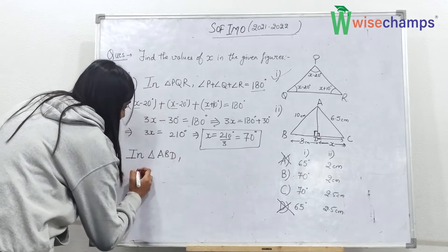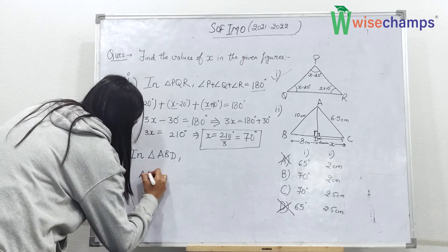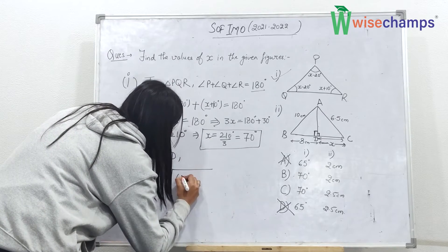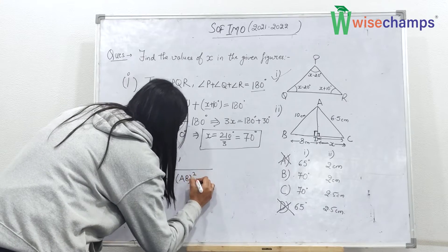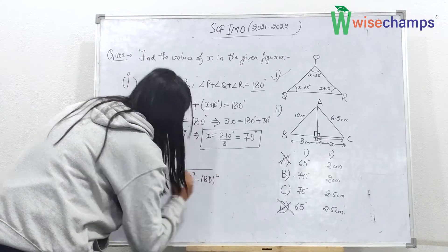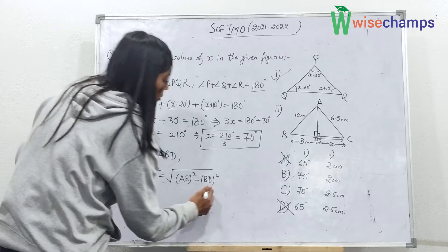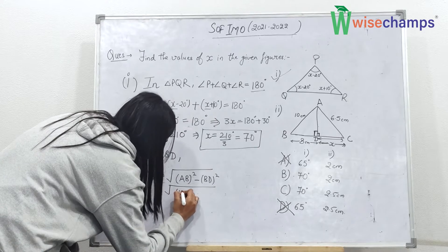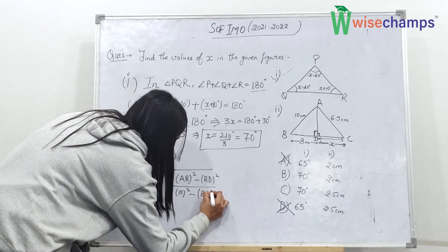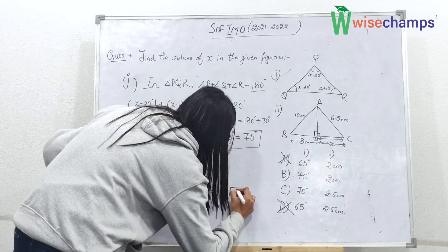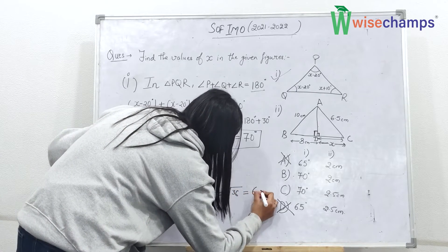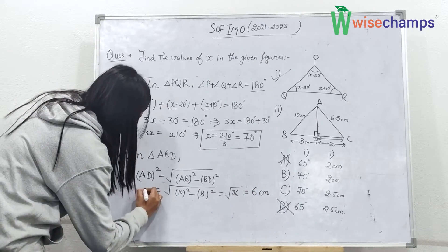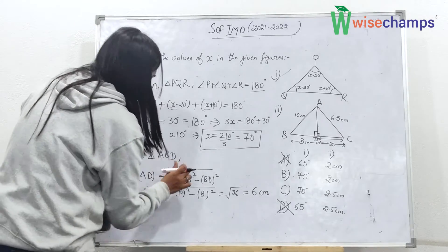So what value will we get? AD is equal to root AB whole square minus BD whole square. This is the Pythagoras theorem. Now put the values. AB is 10, so 10 square minus BD is 8, 8 square. So you will get root 36 and the answer would be 6 centimeters. So the value of AD is 6 centimeters.